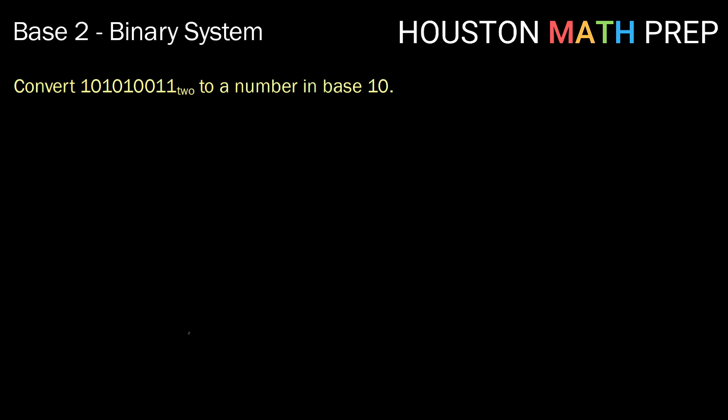Let's try another one. This one has even more digits. We'll start with 2 to the 0 power, 2 to the 1, 2 squared, cubed, 4th, 5th, 6th, 7th, and 8th.